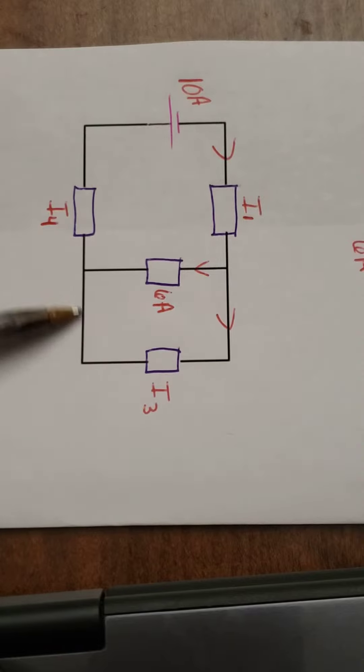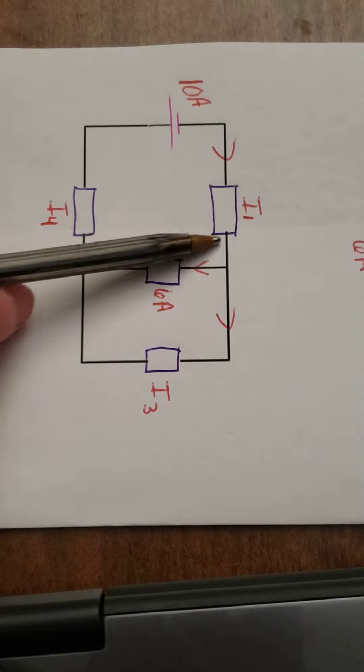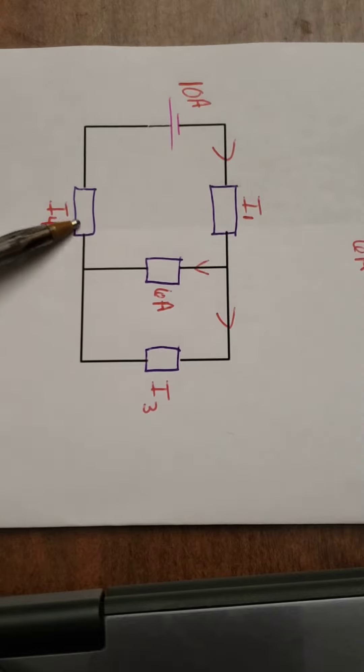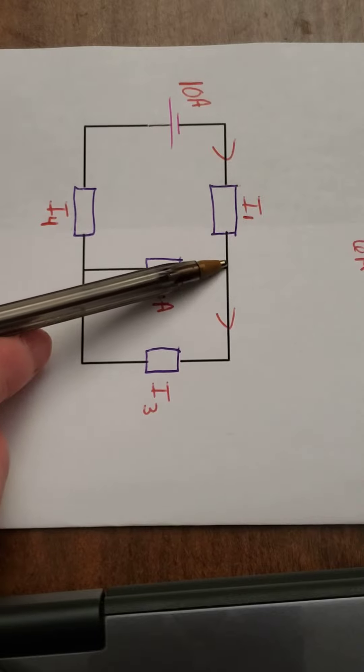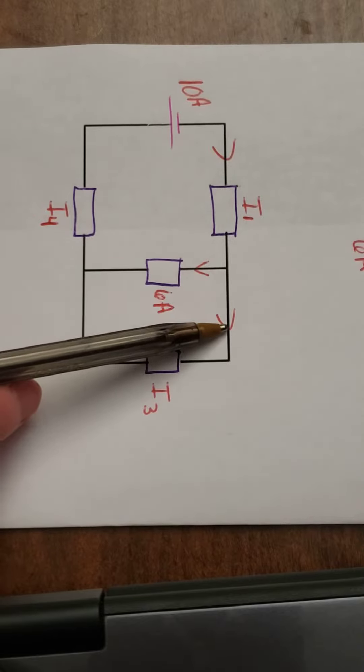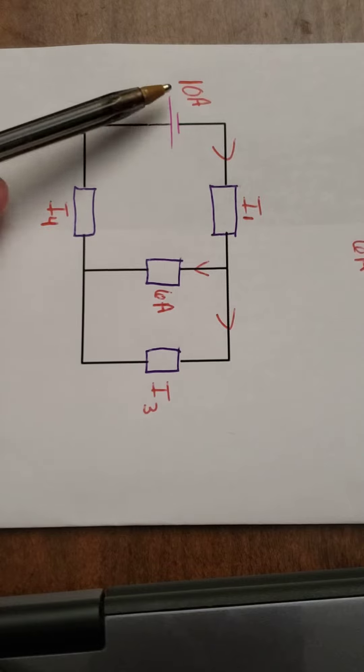And then when the current comes back together here, it has to go through this part. So on this side, I have a series circuit, but then on the right side, it branches off to be parallel. So let's try to solve this.